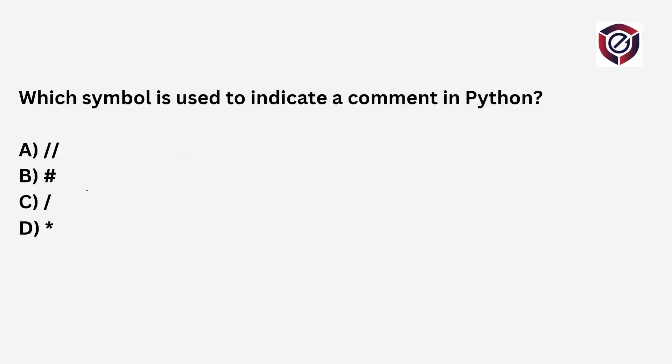Next question: which symbol is used to indicate a comment in Python? Four options are given: forward slash, two forward slashes, hash, and star. The correct option is the hash symbol. Whenever you want to add a comment in Python, you use the hash symbol. Forward slashes and star marks are used in C, C++, and Java, but in Python we use the hash symbol for comments.